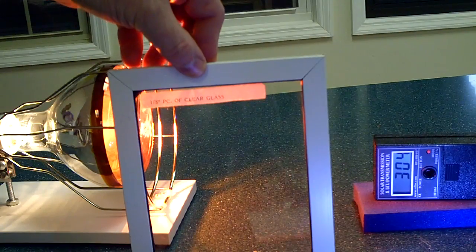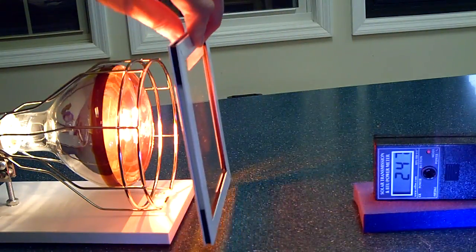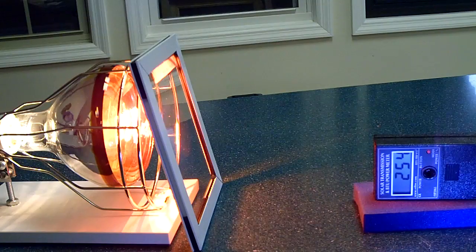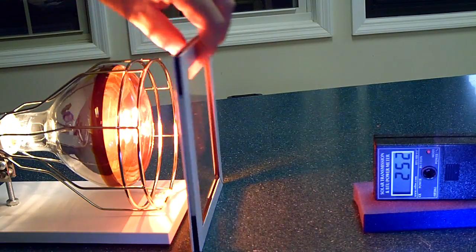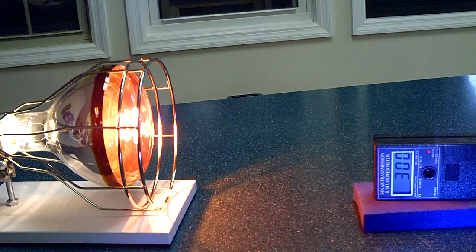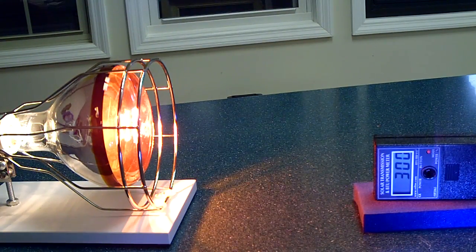We start by showing single pane commonly found in storm windows. With a starting reading of 300, we now see the amount of heat transferring through the glass is in the 250's. That is a 16% reduction in heat. Not bad for a single pane clear glass.